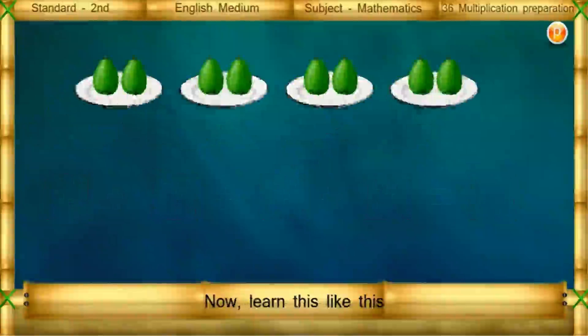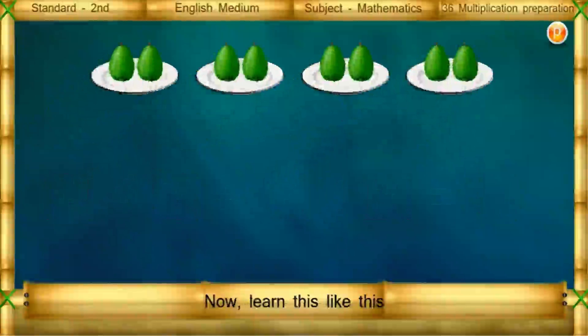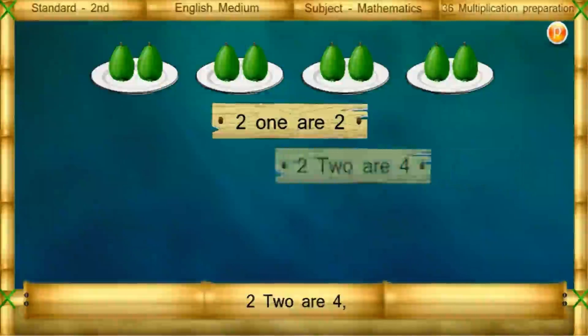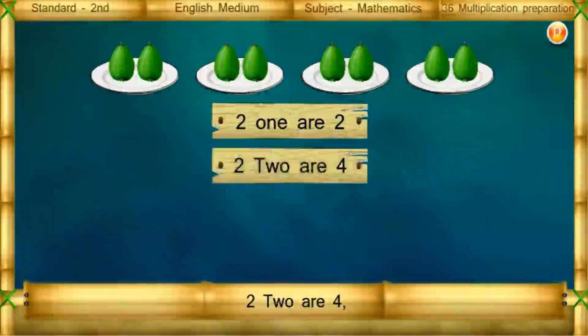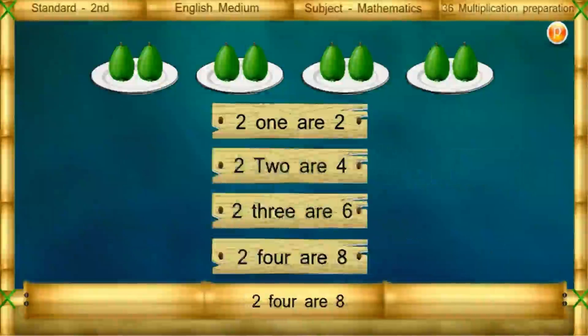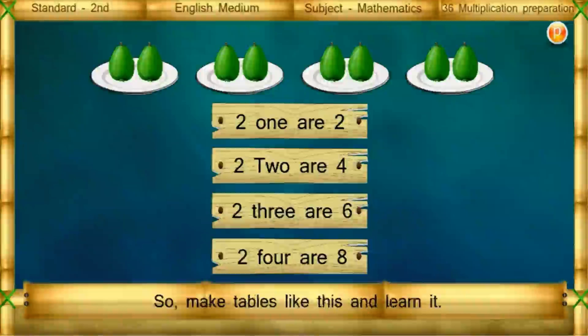Now learn like this: 2 one's are 2, 2 two's are 4, 2 three's are 6, 2 four's are 8. So it will be easy for you — make tables like this and learn them.